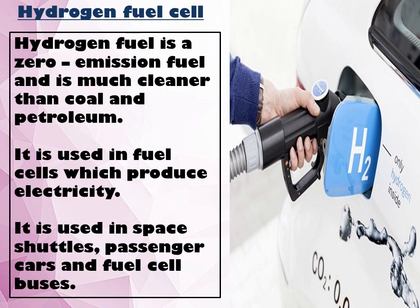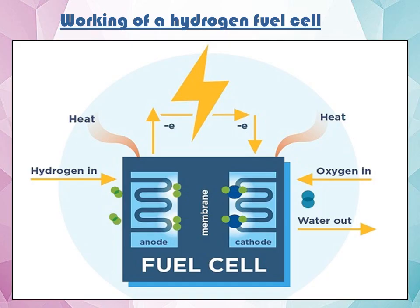Hydrogen fuel cell: Hydrogen fuel is a zero emission fuel and is much cleaner than coal and petroleum. Hydrogen is used as a fuel in fuel cells which produce electricity, and is used in space shuttles, passenger cars and fuel cell buses. A fuel cell requires hydrogen from a fuel station and oxygen from the air. Hydrogen is passed through the anode (positive terminal) whereas oxygen is passed through the cathode (negative terminal) of the cell. Hydrogen electrons flow from anode to cathode and produce electricity. Vehicles that run on hydrogen fuel cells emit only water vapour without any other harmful emissions.